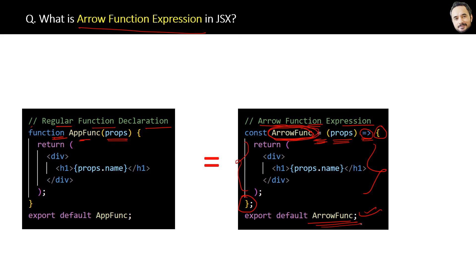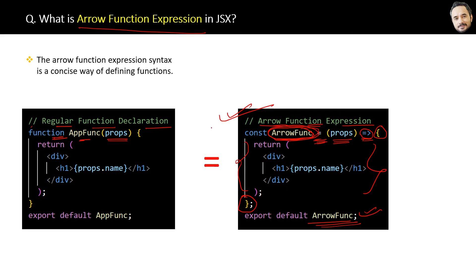Going forward, in most places — because this is the recommended approach — I will be using this arrow function expression approach to declare components. The arrow function syntax is a concise way of defining a function.